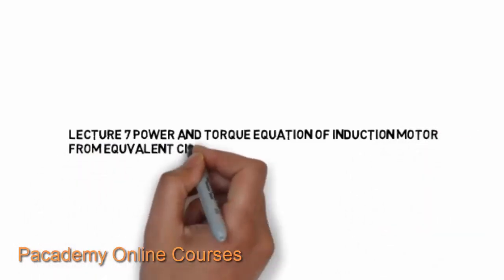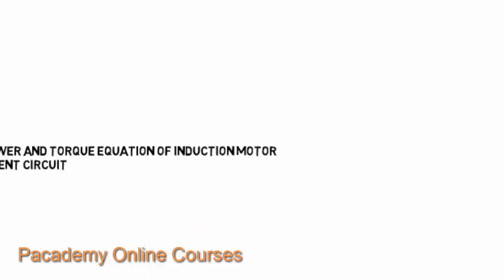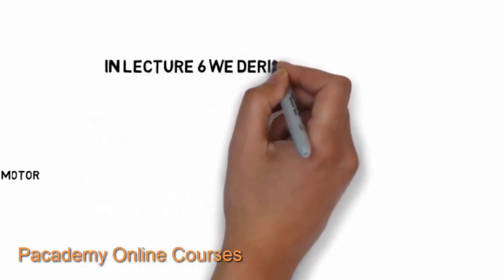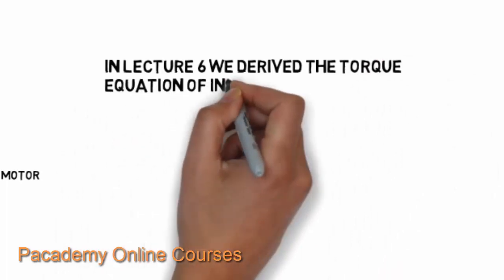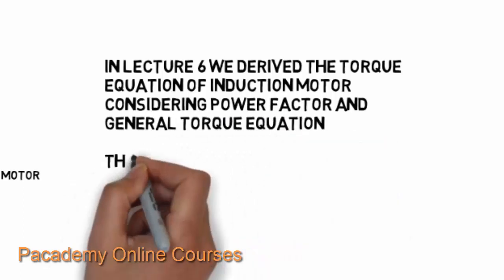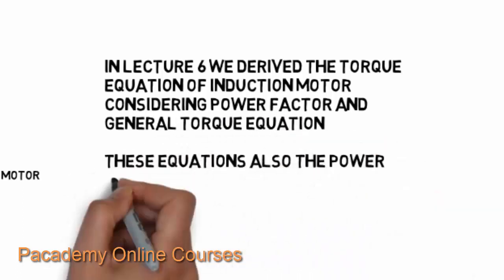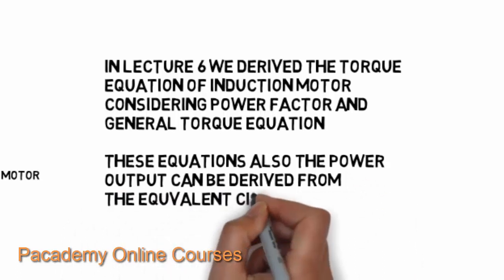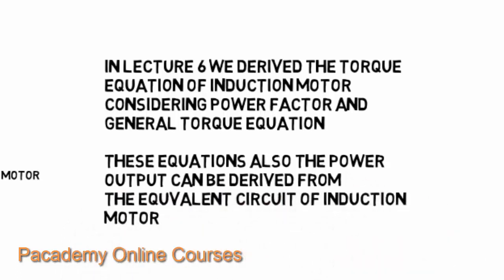This is Lecture 7, which is about the power equation of induction machines. In Lecture 6, we derived the torque equation of the induction motor, considering the power factor, and the general torque equation was derived. This power equation can also be derived from the equivalent circuit of an induction motor, as can the general torque equation. It was seen that the torque of the induction motor varied with the power factor.